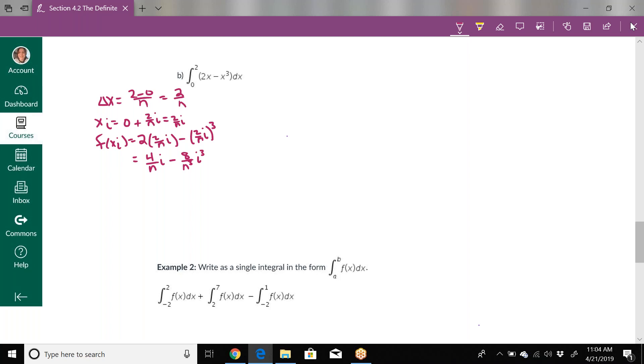My Riemann sum is the limit as n approaches infinity of the sum from i equals 1 to n of 4 over n i minus 8 over n cubed i cubed, times the width 2 over n. Now we'll multiply the 2 over n first, then pull out constants. This gives us 8 over n squared i minus 16 over n to the 4th i cubed.